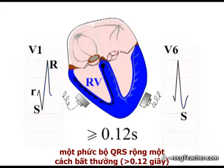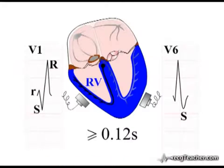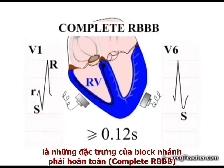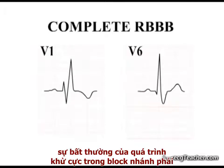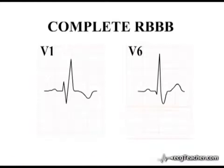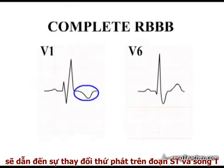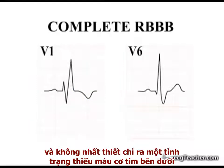Abnormally wide QRS complexes with an RSR pattern in lead V1 and a delayed slurred S wave in lead V6 are the characteristic ECG findings of complete right bundle branch block. The highly abnormal pattern of depolarisation in right bundle branch block results in an altered pattern of repolarisation in the right ventricle. Right bundle branch block is therefore associated with ST and T wave abnormalities in the right-sided chest leads. These abnormalities are a secondary phenomenon and do not necessarily indicate underlying ischaemia or strain.